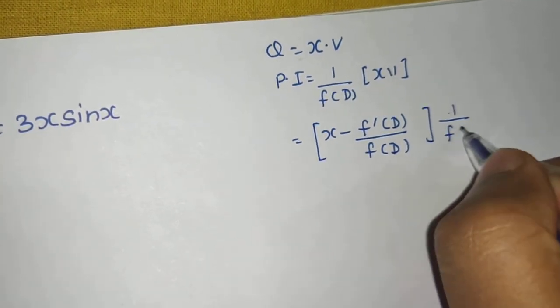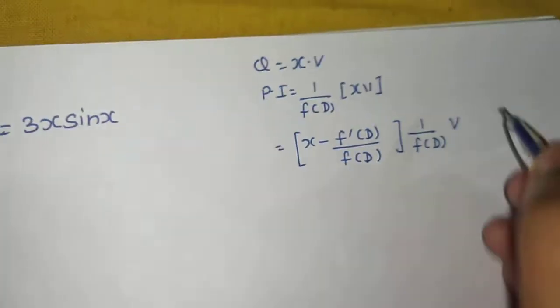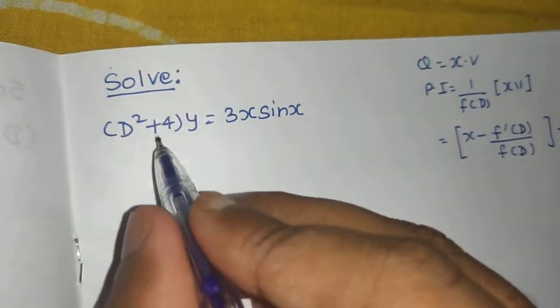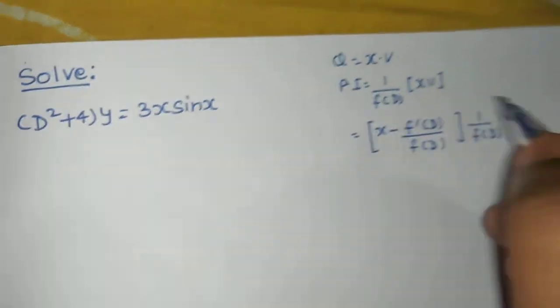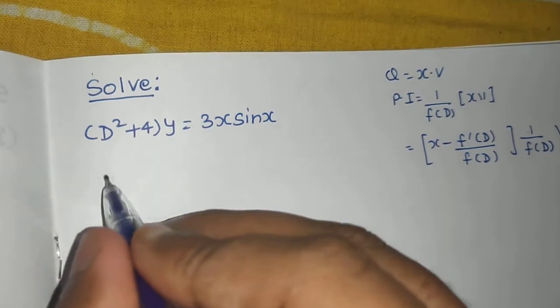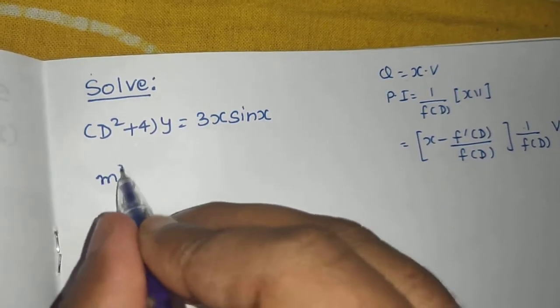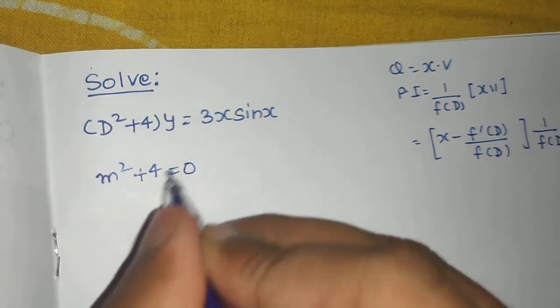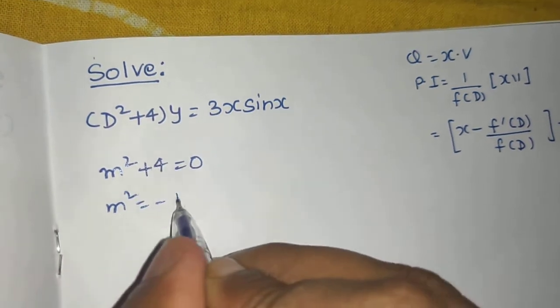1 upon f of D operating on this v. First of all, complementary function. We will use this rule. Convert from D to m form. So m² + 4 = 0, m² = -4.